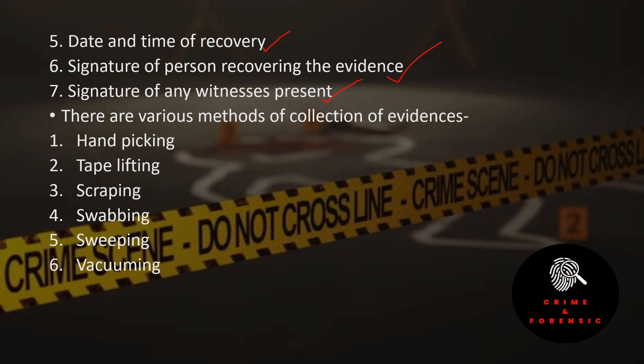There are various methods of collection of evidence. First is hand picking — used to collect evidence that can easily be held in the hand, like books, clothes, paper, etc. Next is tape lifting — using adhesive tape to help with fingerprint collection. Scraping — for nails. Swabbing — for small amounts of fluid or body fluid, and for areas with a pool of blood. Vacuuming — for hair and fiber and other minute evidence.